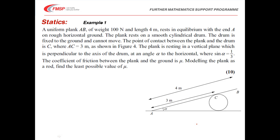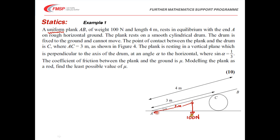Let's take a look at an example. If you'd like to pause and work through it yourself, please do. So we have a uniform plank, weight 100 N and length 4 m, resting in equilibrium. The keyword 'uniform' means the mass is uniformly distributed along the plank, so we can locate the weight at 2 metres from the end. We put in a vertical reaction force R at end A on the rough horizontal ground, and a reaction force S perpendicular to the plank at point C on the cylindrical drum.